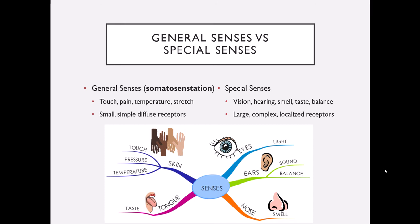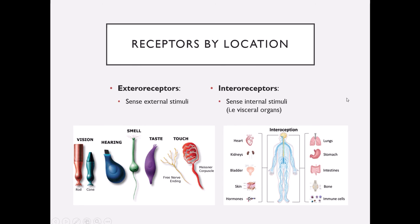Touch, pain, temperature, and muscle stretch are classified as general senses. One of the ways we classify receptors is by the type or source of stimulus to which they are responding. Exteroceptors respond to external stimuli — all of our special senses like smell, taste, and hearing are exteroceptors. Interoceptors respond to internal stimuli; in all of our visceral organs we have receptors that sense stretch, chemicals, and all kinds of things going on inside our body.